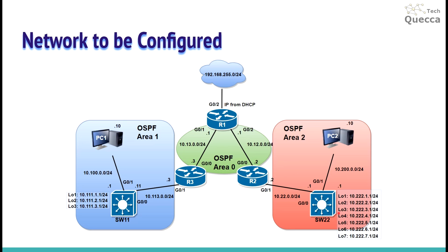First I'm going to do route summarization — summarize these three subnets and these three subnets for the loopback interfaces into two summary routes. Then I'm going to do OSPF route filtering with summarization and filter the summary route for the first three subnets. Then I'm going to do OSPF area filtering and filter those three subnets. Finally, I'll do OSPF local filtering — remove the summarization and filter four subnets, filtering only one subnet on router R1.